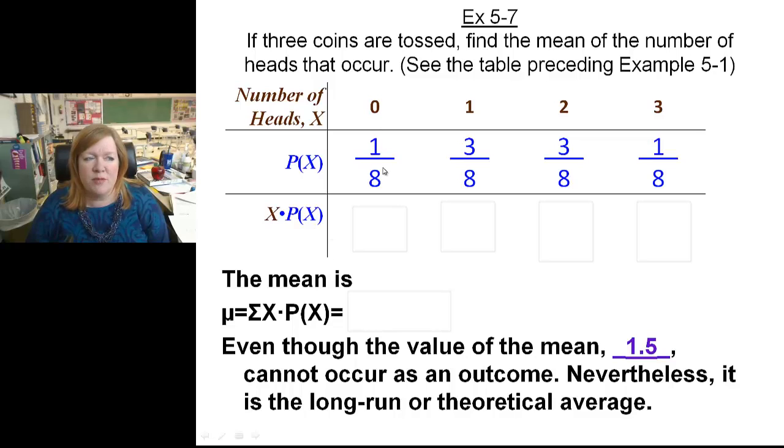To find the mean, you multiply the zero times the one eighth, the one times the three eighths, and so on. So this is going to be zero, and then we're going to add three eighths, and we're going to add six eighths, and three times one eighths, we'll add another three eighths. Three plus six plus three, that's twelve over eight, which is 1.5.